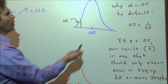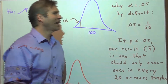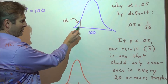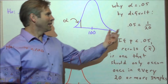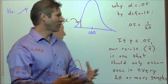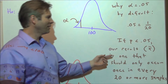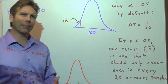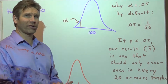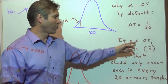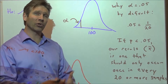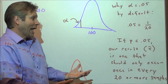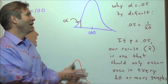Why do we use an alpha level of 0.05 by default? Why is a 5% level of significance typically what we go with? The reason is that 5% is 1/20th. So if we get a p-value below 0.05, our result — our x-bar — is something that should only happen in one out of every 20 or more samples. If we take one sample and get a p-value below 0.05, that indicates an unusual sample result coming from a population where the null is true. It should only happen one out of every 20 or more samples — so that's unusual.